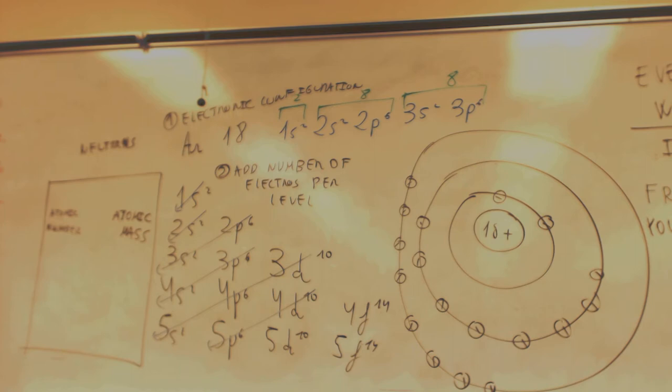For argon, atomic number is 18 and atomic mass is 40. This is the number of protons and this is the number of protons plus neutrons. So how do you get the number of neutrons in argon? Subtract. Then you got 22 neutrons.